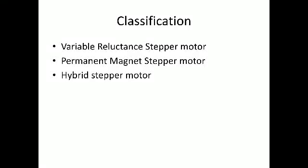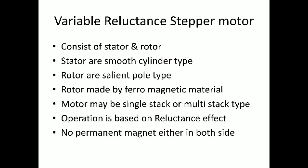From the classifications, we have three types of stepper motor. We start from the first one: variable reluctance stepper motor. We already know reluctance motor, which means a torque is produced by a rotor to find a low reluctance path. This is the principle of rotation. Based on this effect, this motor will function, but the rotation is not in a continuous manner — it will rotate in a step-by-step concept.